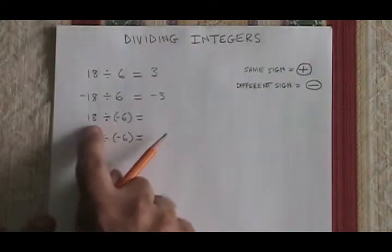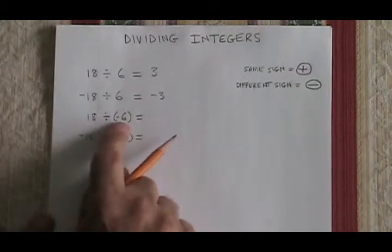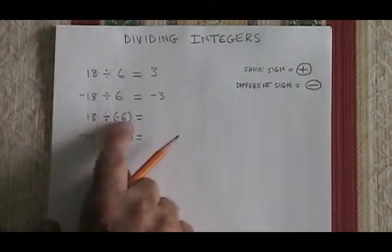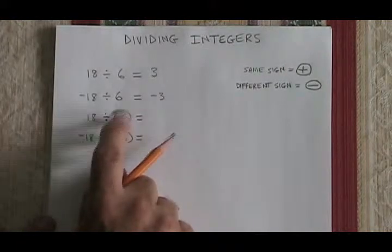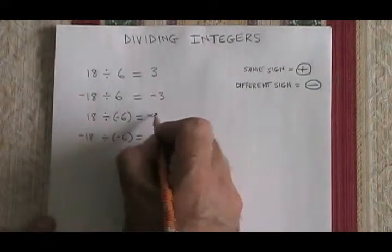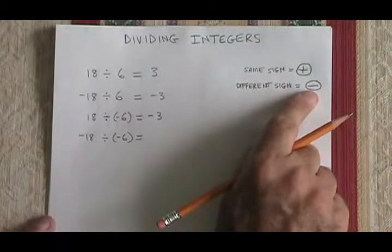18 divided by negative 6 is another situation where you have different signs. This time the 18 is the positive one and the negative 6 is the negative one, but it still gives us negative 3 because they have different signs, so the answer has to be negative.